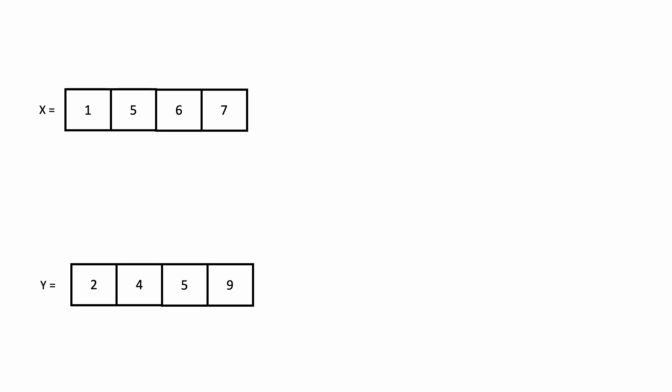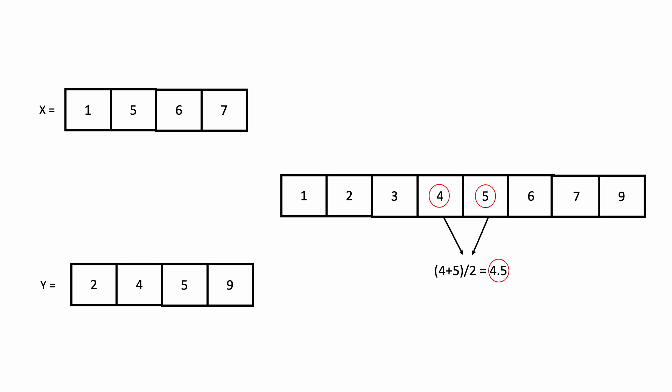But the question is: how can we use binary search to find the median? Let's take this test case to reach the solution, where x is [1, 5, 6, 7] and y is [2, 4, 5, 9]. The expected output would be 4.5, because if you merge and sort the two arrays, the average of the middle values, which are 4 and 5, is the median: 4.5.